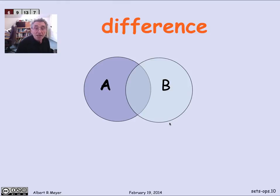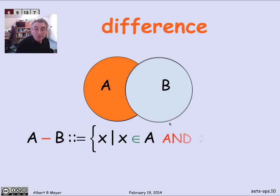So just for the record, let's put down that last operation. The difference operation is the set of elements that are in A and not in B. So we'd write it as A minus B is the set of points that are in A and not in B. And it's illustrated by this region that's highlighted in orange.